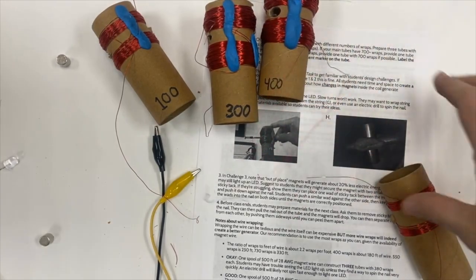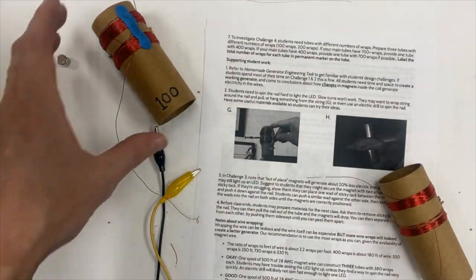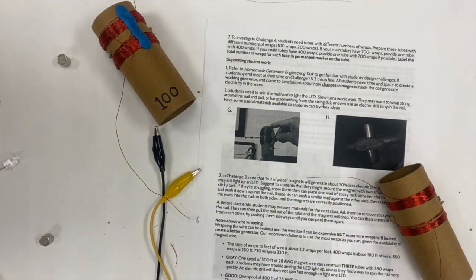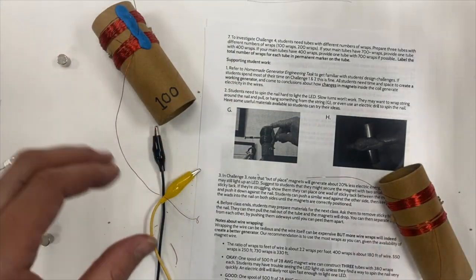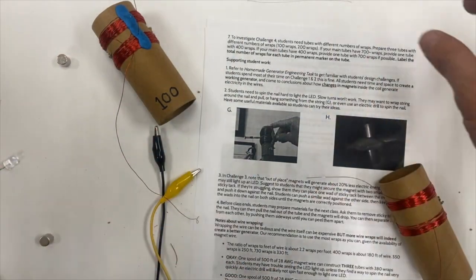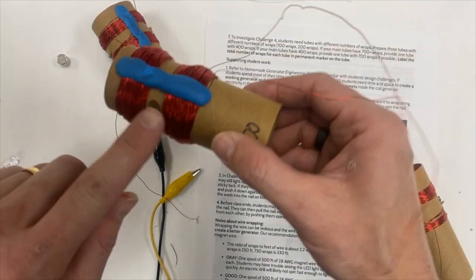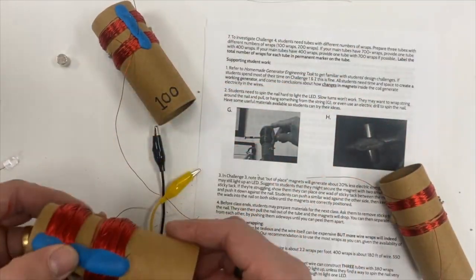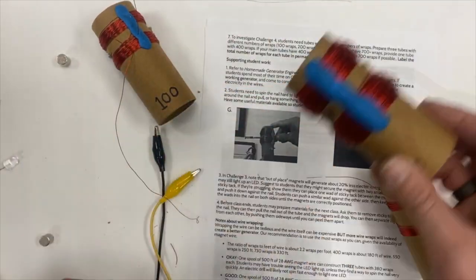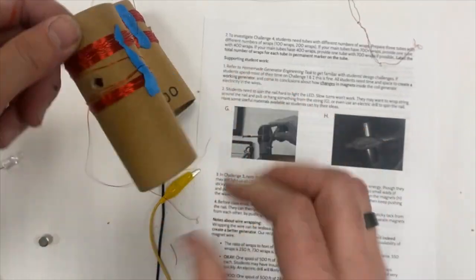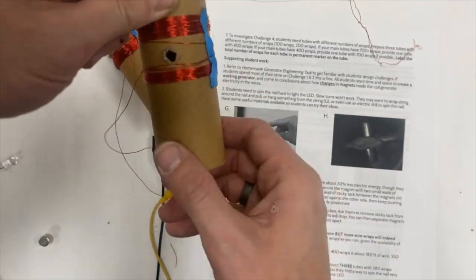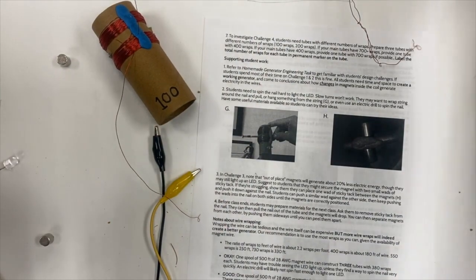800 wraps is a lot, but it will work really nicely. There's just a whole lot of wire wrapped around the tube, so it can fall off. You will end up needing a little bit more sticky tack to really secure it in place. Once you've made these, I would recommend writing the number of wraps on the tube so that's easy for students to know.